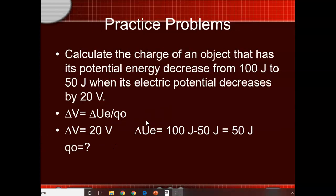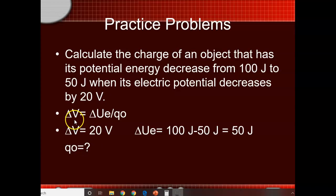Here's a sample problem: calculate the charge of an object that has its potential energy decrease from 100 joules to 50 joules when the electric potential decreases by 20 volts. The 20-volt drop could be from 20 to zero or 40 to 20 — we don't know. The potential difference, or voltage, is the change in electric potential energy divided by the charge that is moving.